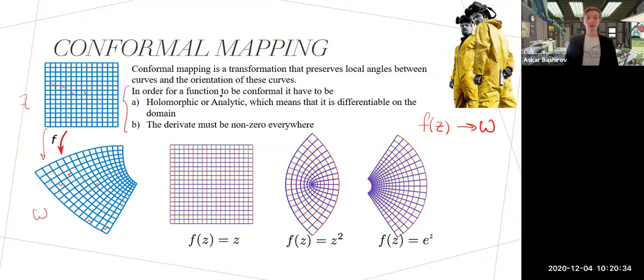What does it mean for a function to be conformal? It has to be holomorphic and analytic. It means it's differentiable from both sides and the derivative must be non-zero everywhere.